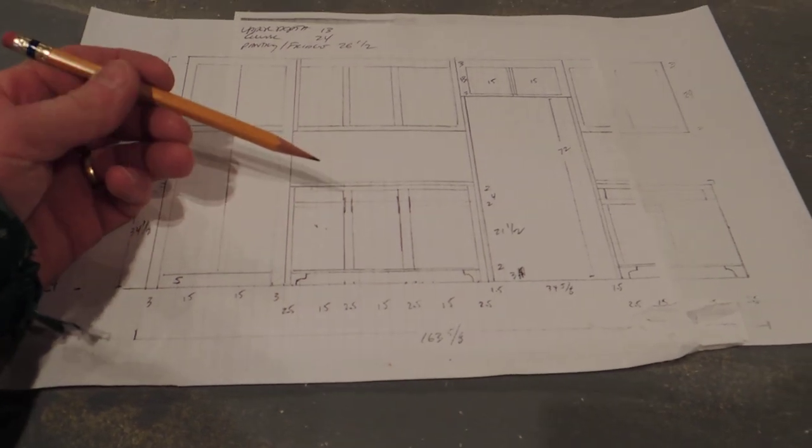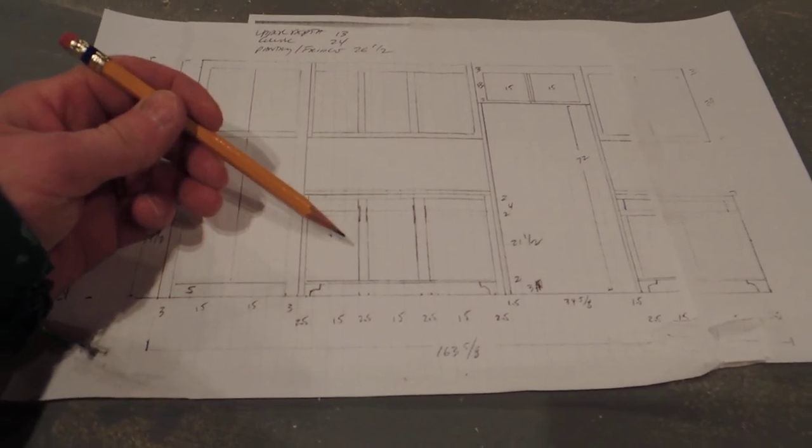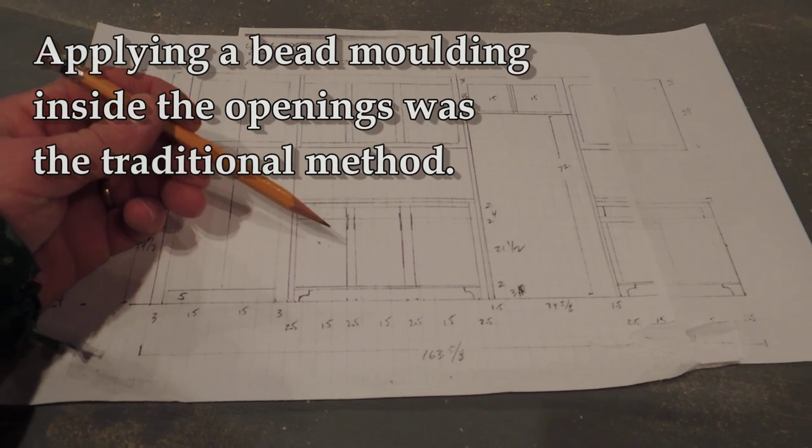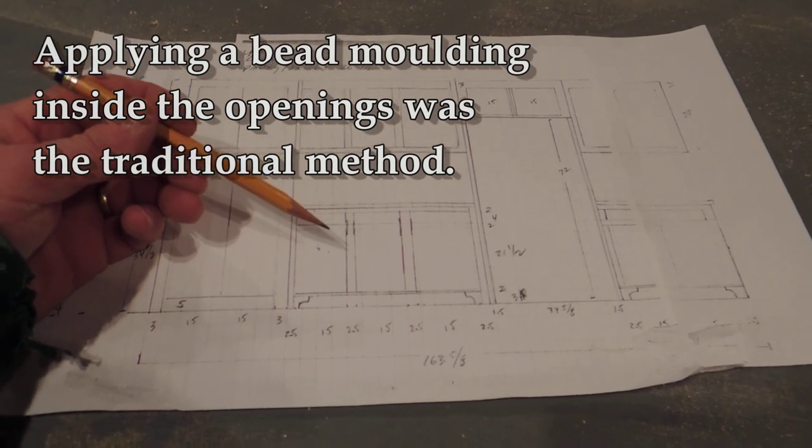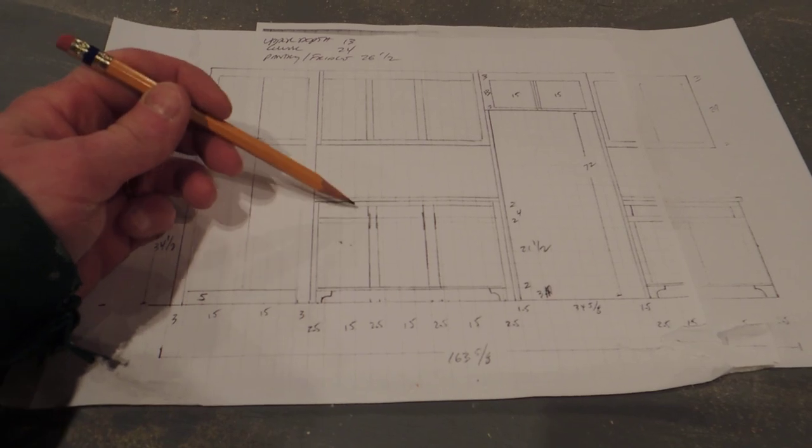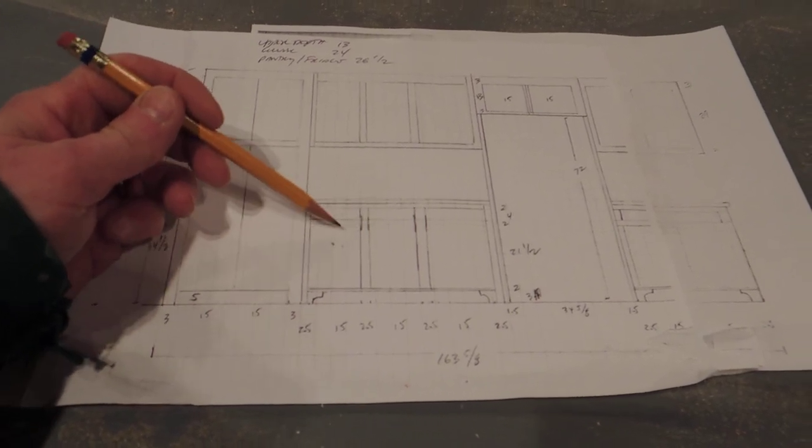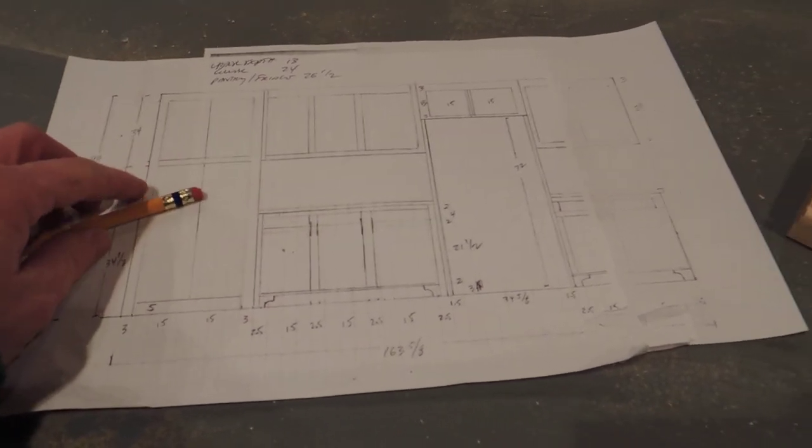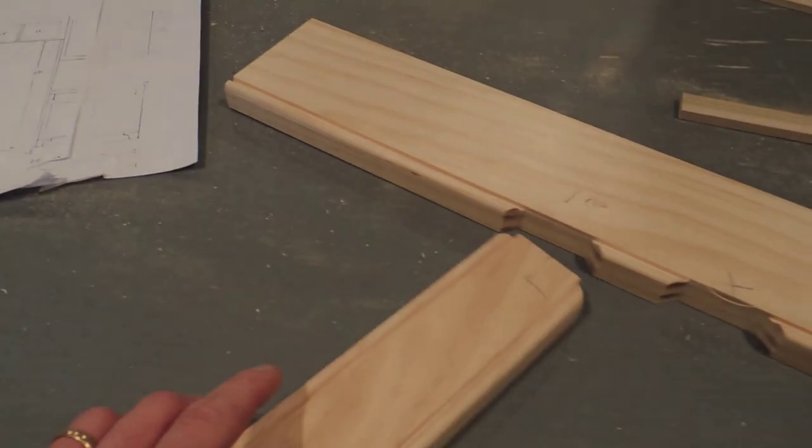Now, one traditional way of doing that is just to build the face frame with square edges, and then on separate wood, cut the bead detail, and then apply it as if you would apply a molding on every edge. So you'd miter the corners and apply each one. And there's nothing wrong with that.